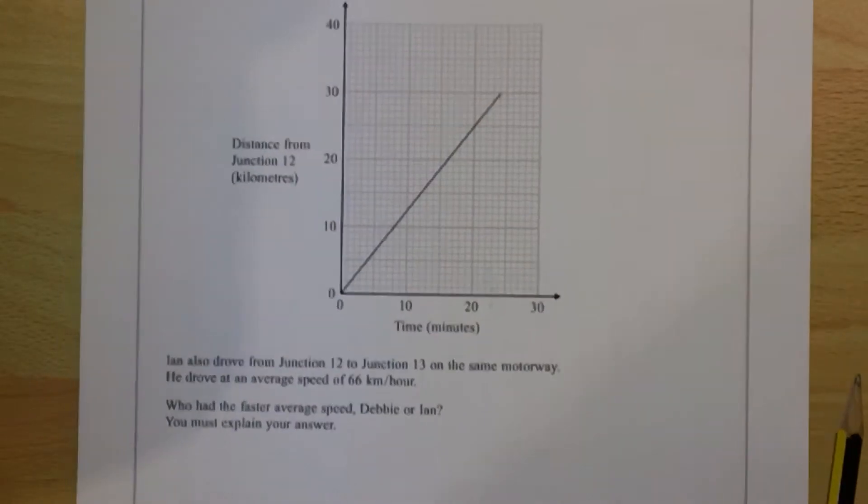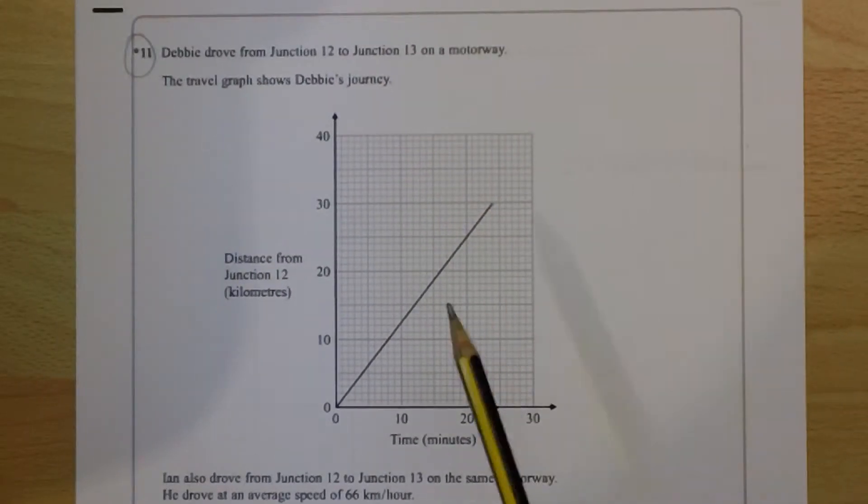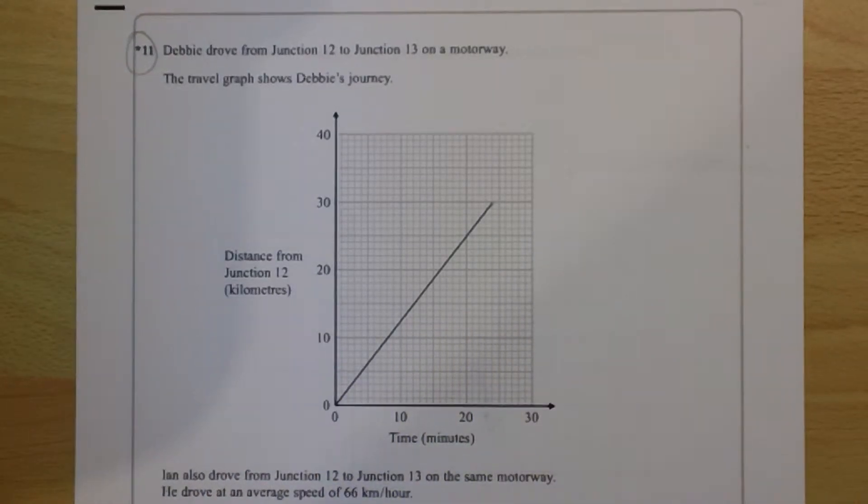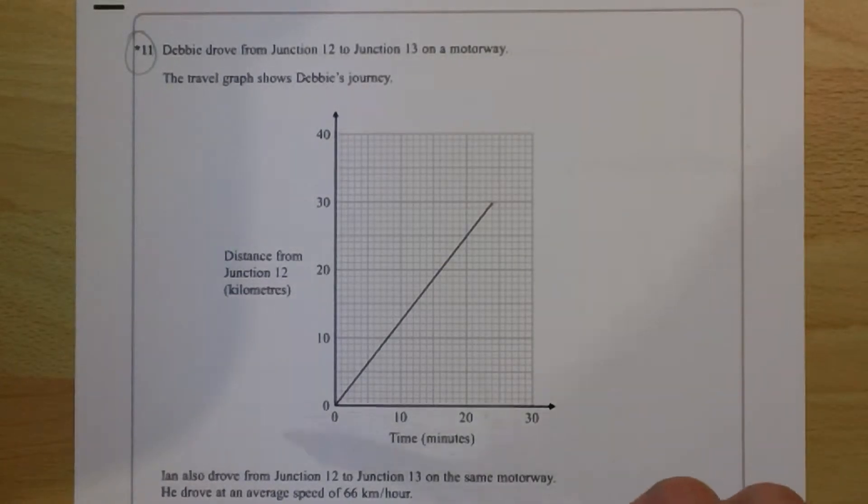There's two ways of doing this. You can take the distance-time graph and use it to calculate Debbie's average speed and then compare that to Ian's speed of 66 kilometres an hour. Or you can use Ian's average speed and plot his distance-time graph and compare them. I'll show you both ways of doing it.